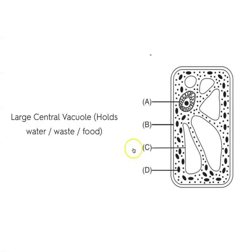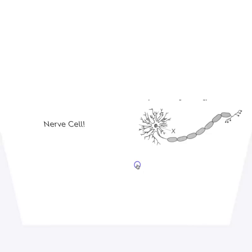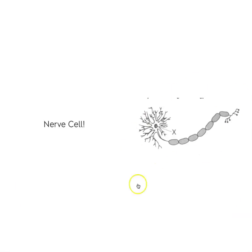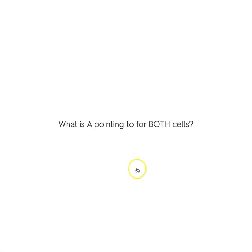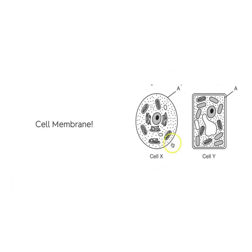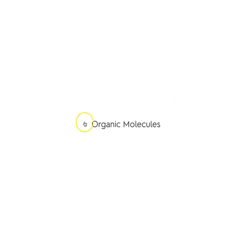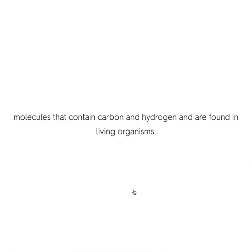Label C: C is pointing to the large central vacuole — it holds water, waste, and food. What type of cell is this? This is a nerve cell from the nervous system. What is A pointing to for both cells? This is an animal cell and this is a plant cell — both A is pointing to the cell membrane.